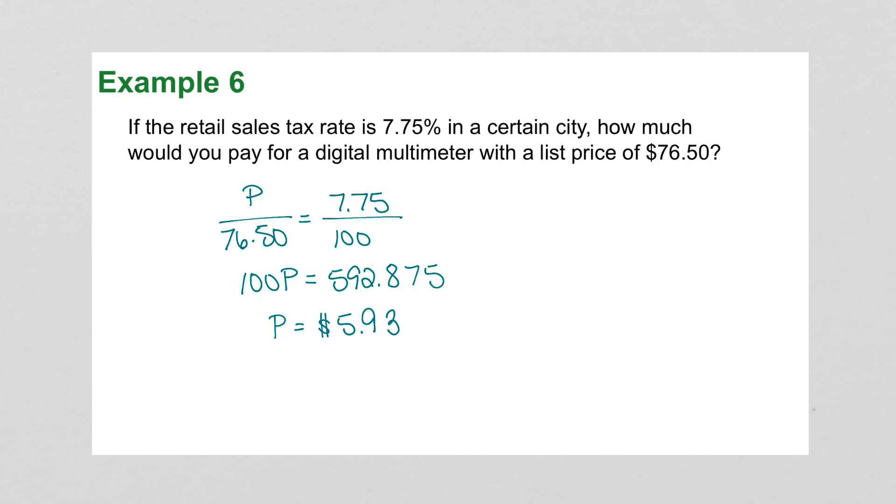Now, is that the cost of this digital multimeter? I hope I'm saying that right. No, that would be nice. That's the amount that you're paying for tax. So the total cost is the original cost of $76.50 plus the tax that you're going to have to pay of $5.93. That's $82.43.